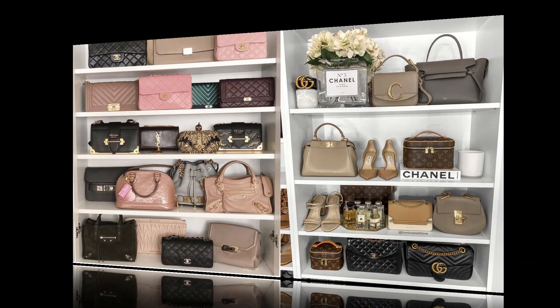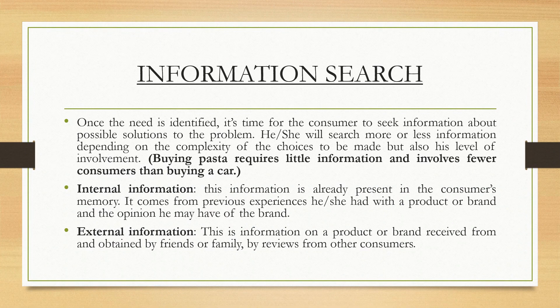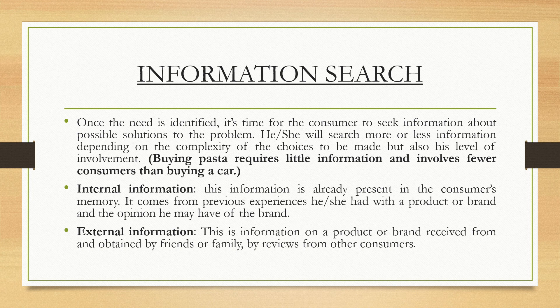Information search: once the need is identified, it's time for the consumer to seek information about possible solutions to the problem. He or she will search more or less information depending on the complexity of the choices to be made and his or her level of involvement. For example, buying pasta requires little information and involves fewer considerations than buying a car. Internal information is already present in the consumer's memory — it comes from previous experiences with a product or brand and the opinion they may have of the brand. External information is information on a product or brand received from friends or family or by reviews from other consumers.